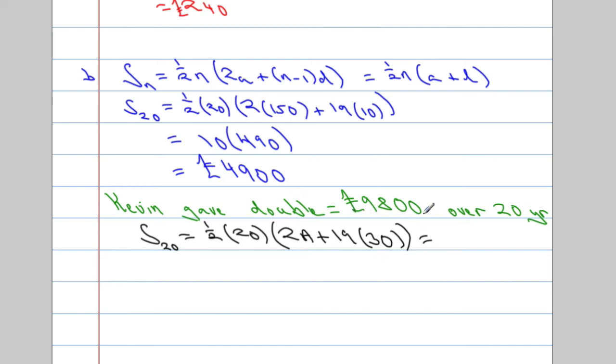And that, ladies and gents, we know is equal to 9,800. Okay. Right, well, I'm going to make life a little bit easier for myself. I know a half times 20 is going to be 10. So I'm actually going to divide both sides by 10 straight away. Make life a little bit easier. So we get 2A plus, and then, 19 times 30. I'll deal with that in a moment. That's going to equal, dividing both sides by 10, 980.